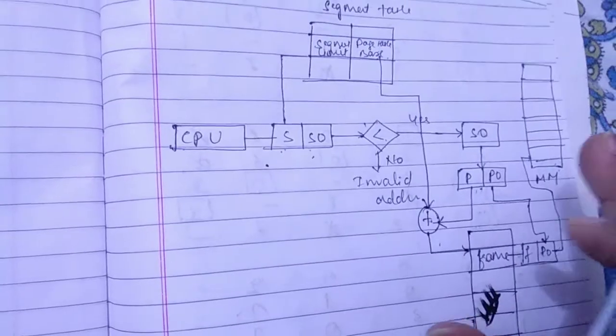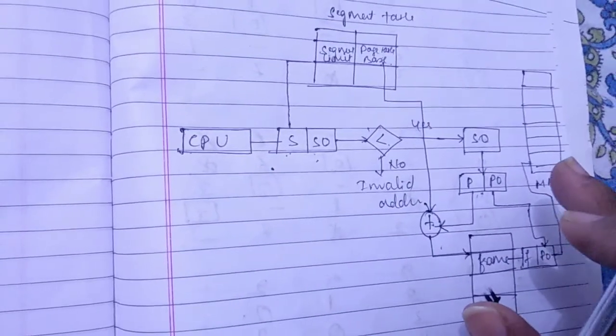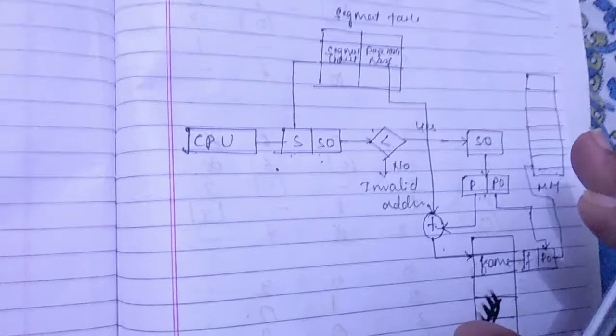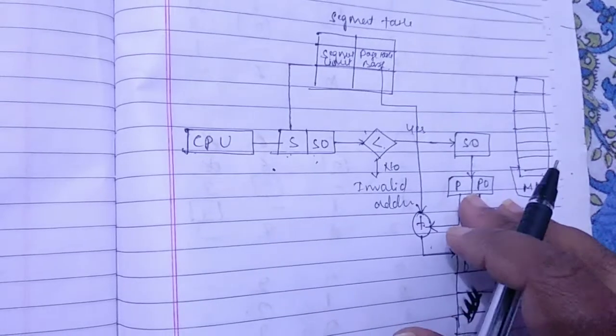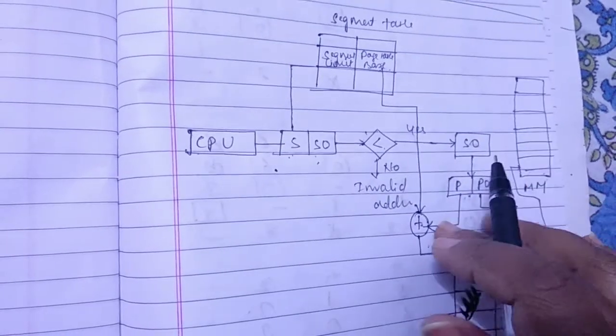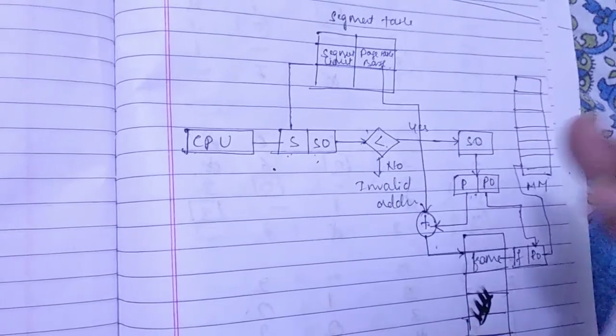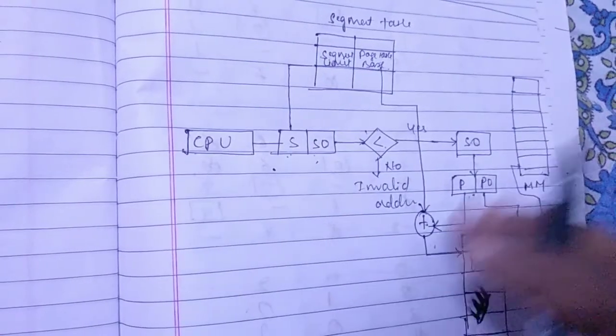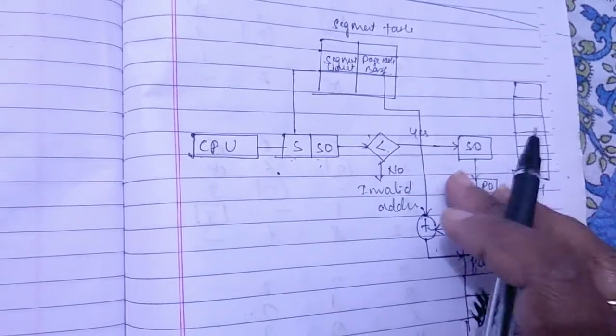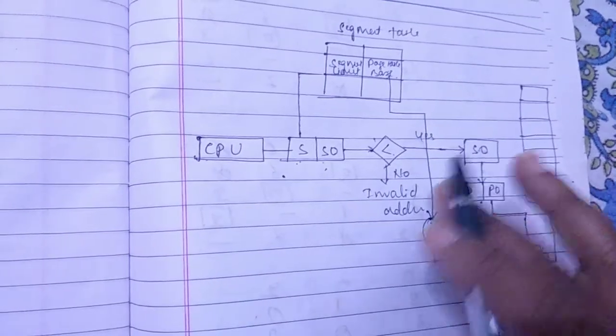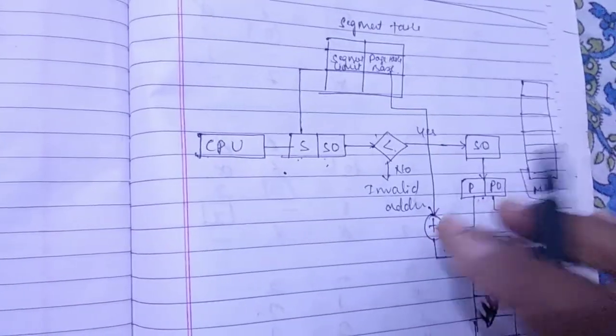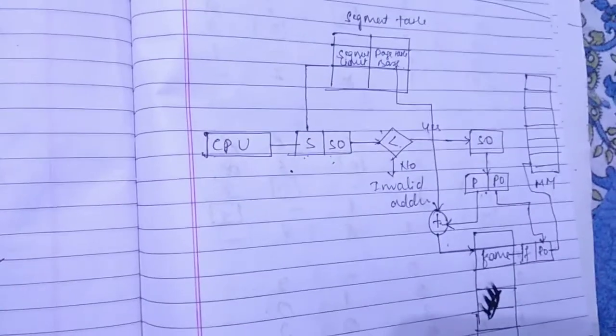So now let us see what are the advantages of segmented paging. The segmented paging reduces memory usage. Page table size is limited by the segment size. As well as segment table has only one entry corresponding to one actual segment. External fragmentation is not there in this case. And it simplifies memory allocation.